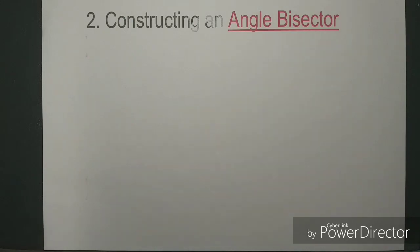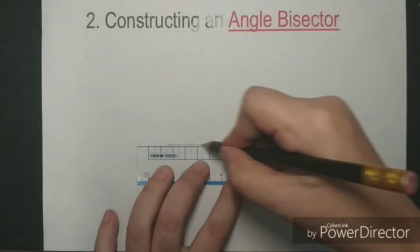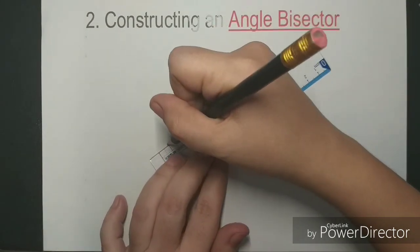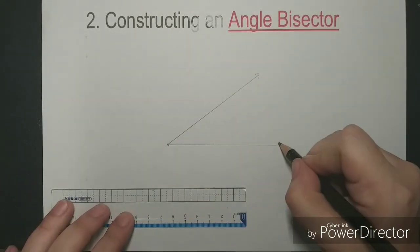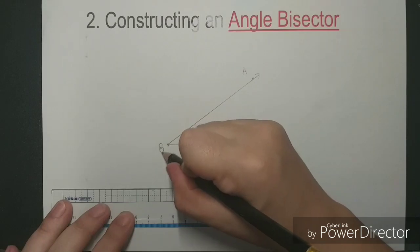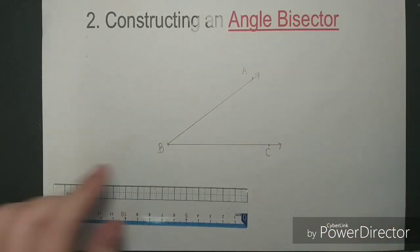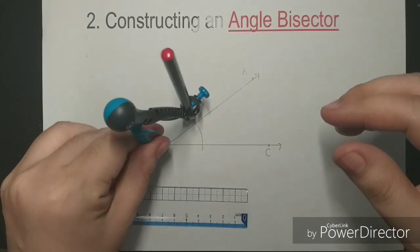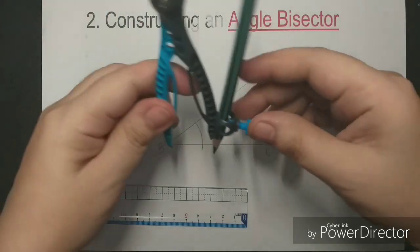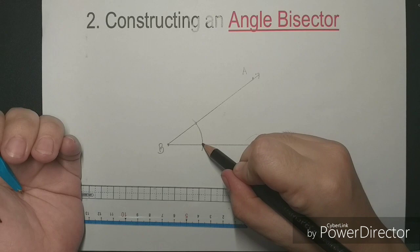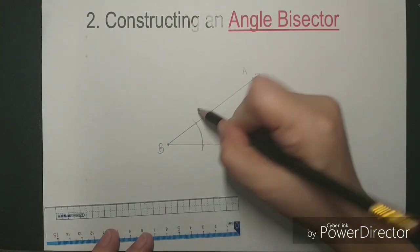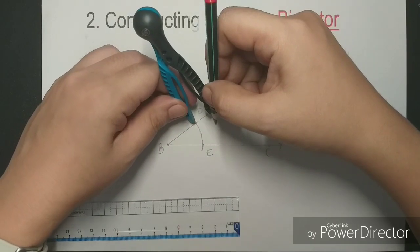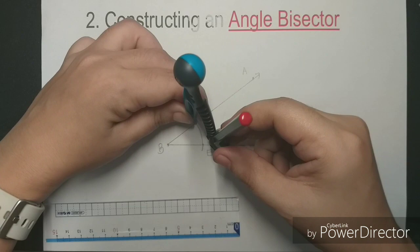To construct an angle bisector, first we need to draw an angle. Any kind of angle will do, but let's draw an accurate angle and name it as angle ABC with B as the vertex. Now, using a compass with B as the center, let's draw an arc that will intersect the two sides. The points of intersection are here — let's name them as point D and point E. Now, using our compass again with point D as the center and a radius greater than DE.